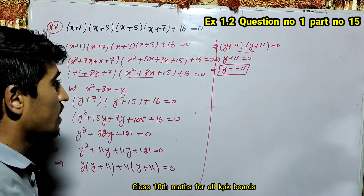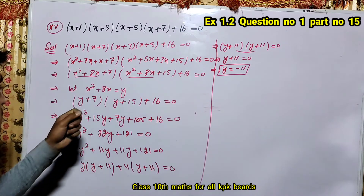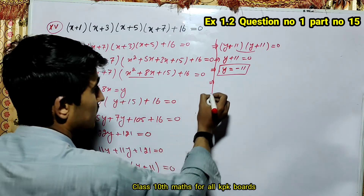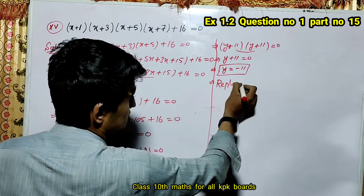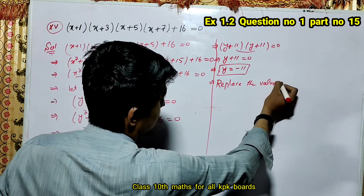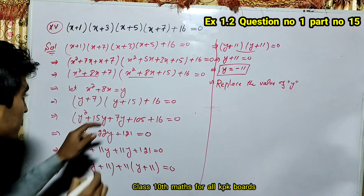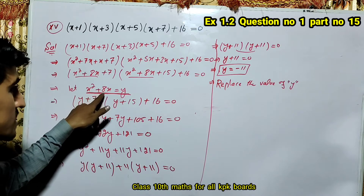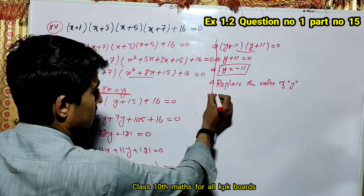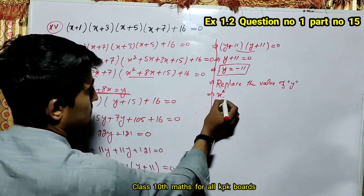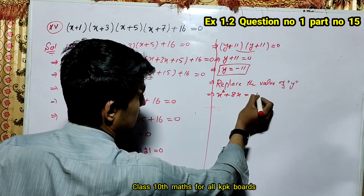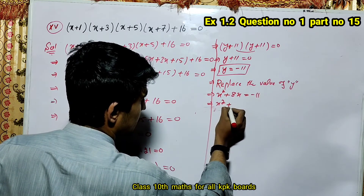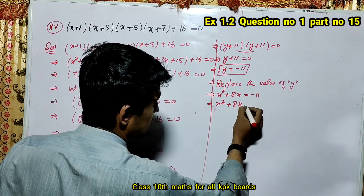We have to replace the value of y. The value of y gives us x squared plus 8x, which is equal to minus 11.